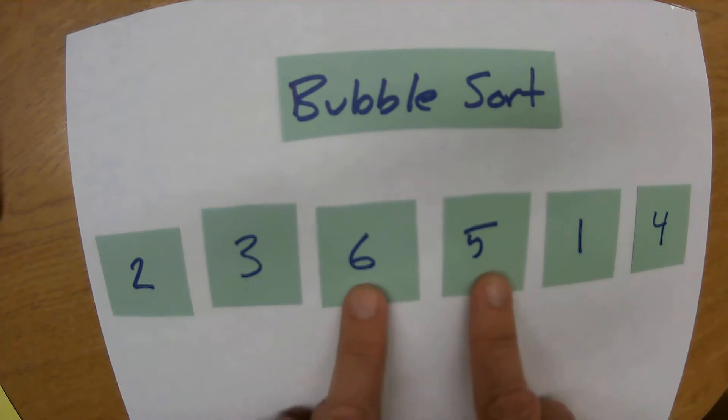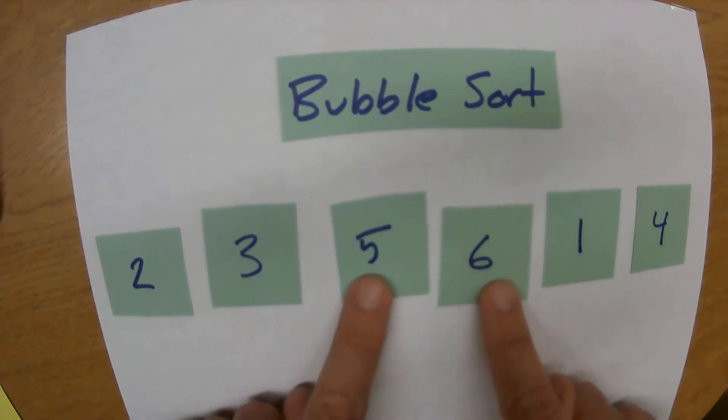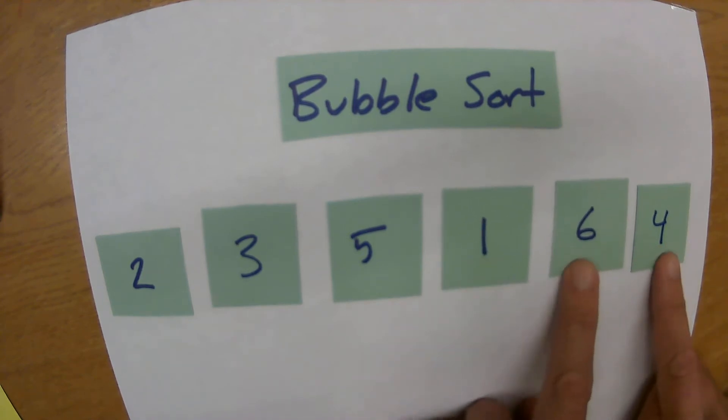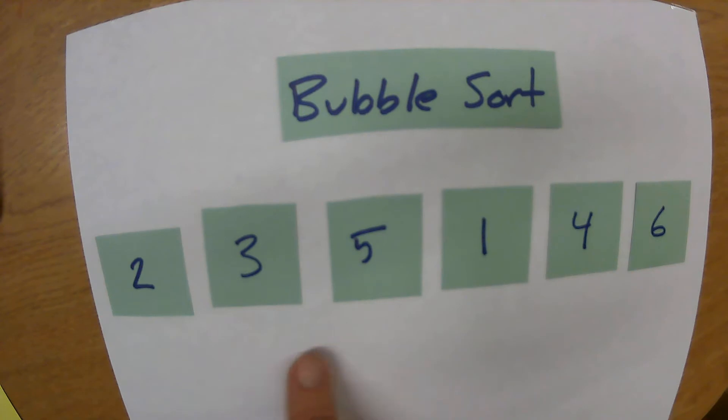These are in the incorrect order so I swap them, these are incorrect so I swap them, and these are incorrect so I swap them. You can see it's kind of why they call it the bubble sort - you watch on that pass the highest element just kind of bubbled its way up to the top.